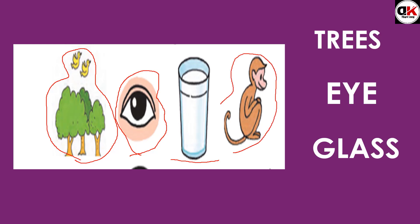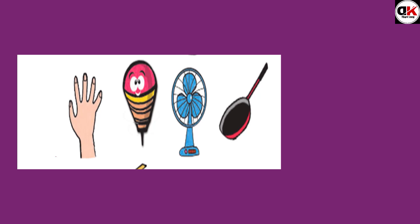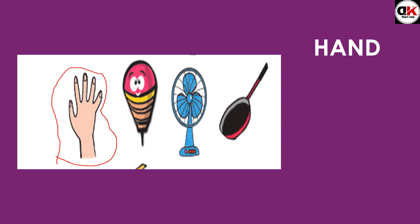Do you recognize this animal? It is a monkey — maakad. Now look at the picture before it — what is it? It is a haath (hand). In English we say HAND — H-A-N-D. And the next one is a fan. FAN in English — F-A-N.